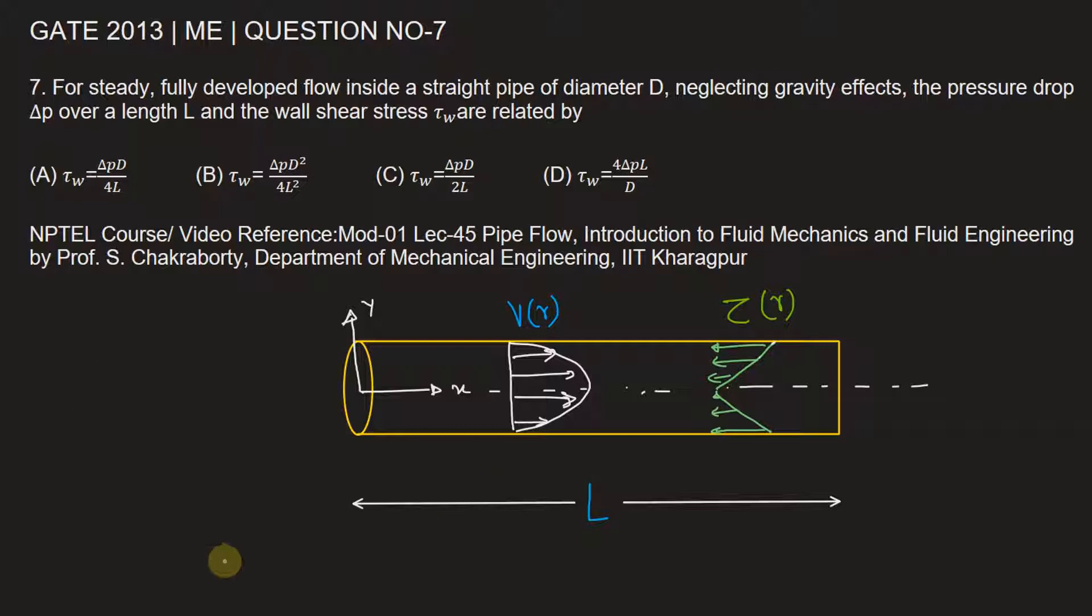is given by τ is equal to negative of pressure gradient in x direction into R by 2.